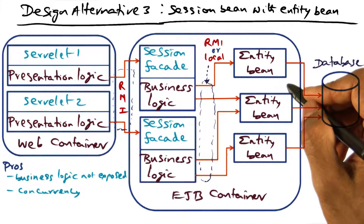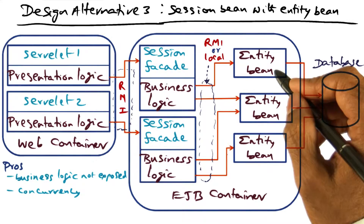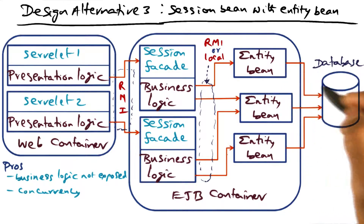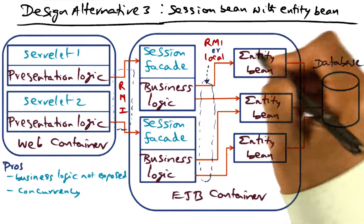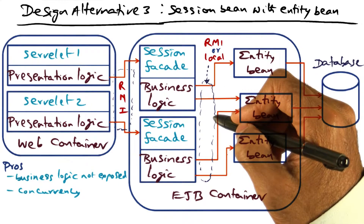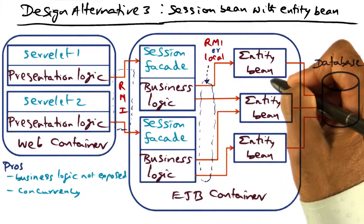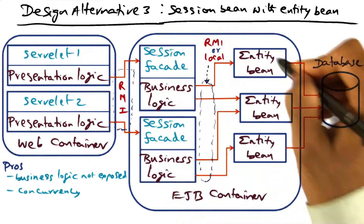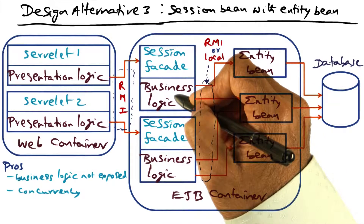Similar to the second design alternative, we structure the database at whatever level of granularity we think is right. An entity bean may be responsible for an individual row or a cluster of rows. That way, we can have the granularity we want for parallel access so that the business logic can be served in parallel, and at the same time we have moved the business logic back into the EJB container, so it is not exposed outside the corporate network.